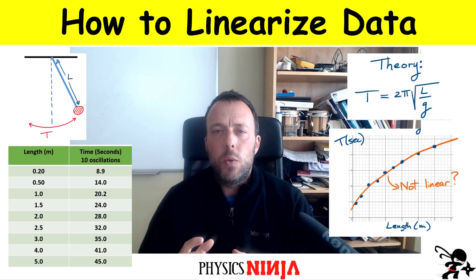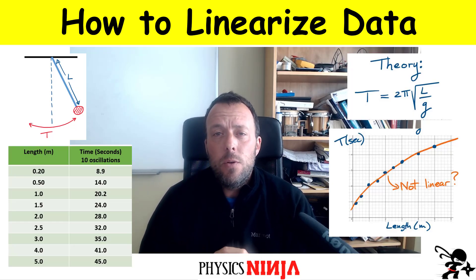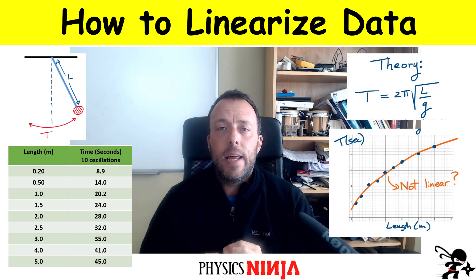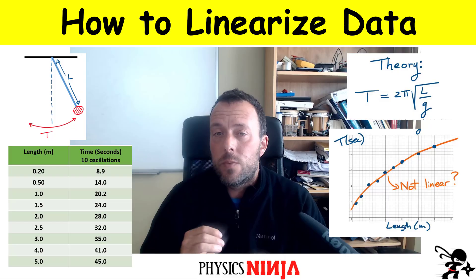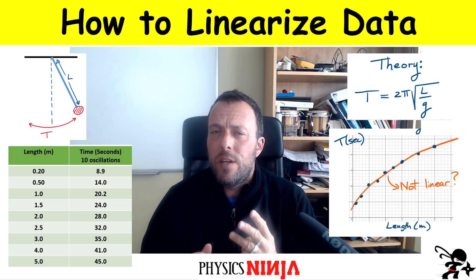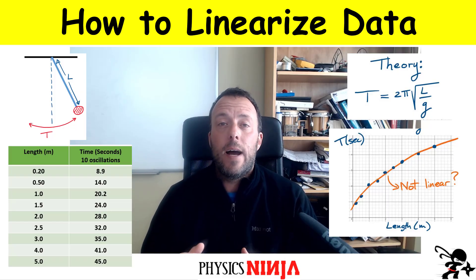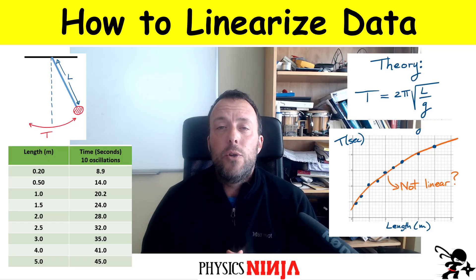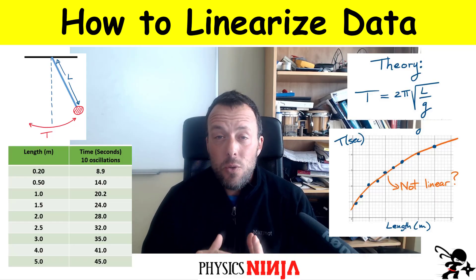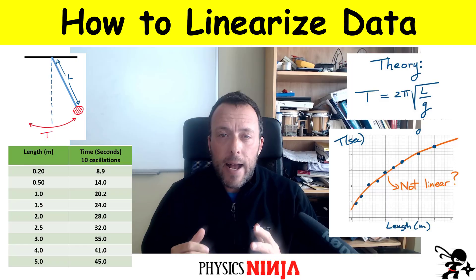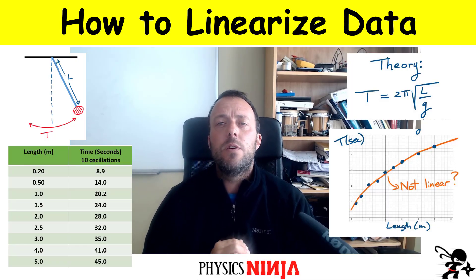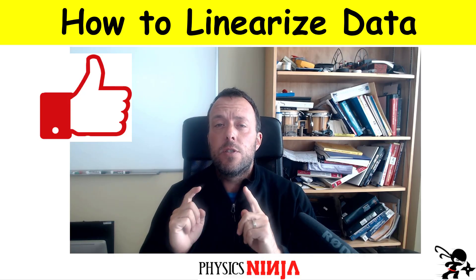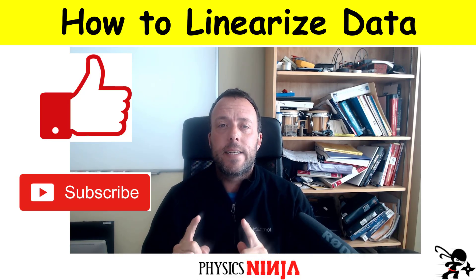What can I do to represent it with a straight line and use that data to calculate little g? We're going to consider three different examples that will show you how to linearize experimental data to produce a straight line graph and use that straight line to extract the information we want. If you like the video, give it a thumbs up and consider subscribing. Okay, let's get started.